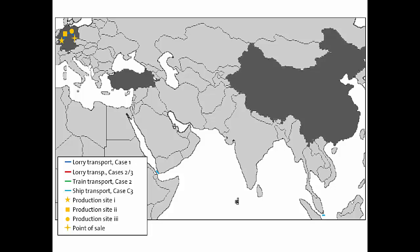In case one, all of the production phases take place within Germany: the granulate production site is in Germany, the next site is where the plastic components are made — the preform, the lid, and the label — and in the next site the preform is blown into the bottle, the label and lid are added, and it is filled with water. The fourth site is the point of sale.